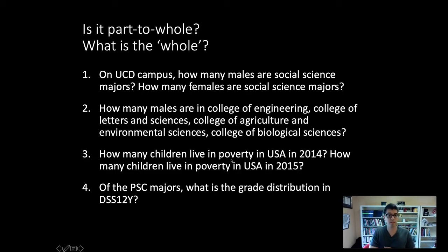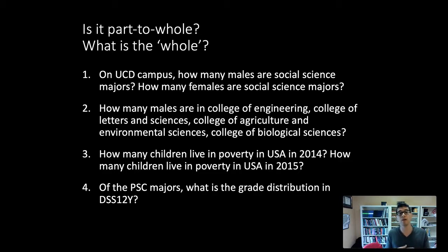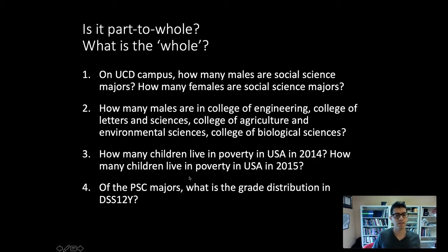Number three: how many children live in poverty in the USA in 2014, and how many children in poverty live in the USA in 2015? Is this a part-to-whole relationship? No. What would the whole be — all children, but in which year? There's not a clear part-to-whole. What we're actually comparing is an amount: the number of children in poverty in 2014 to the number in 2015. This would require two pie charts, and so this isn't really a part-to-whole.